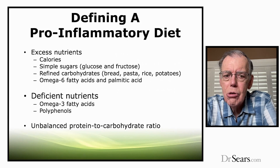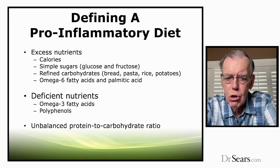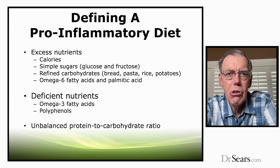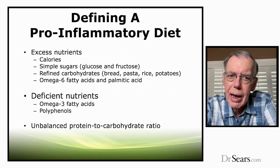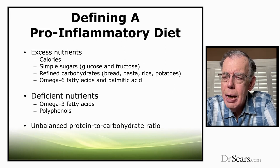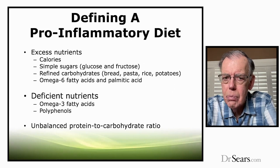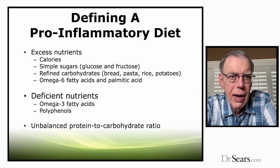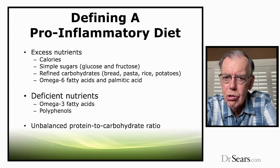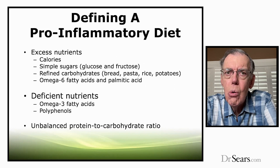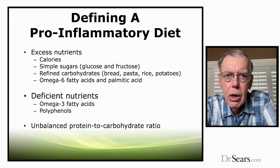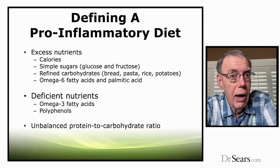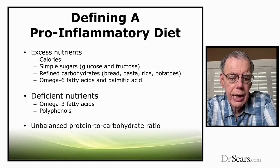Another category is being deficient in certain nutrients — these would include omega-3 fatty acids and polyphenols. And finally, you can have an unbalanced ratio of protein to carbohydrate in your diet. Any one of these three factors can give rise to insulin resistance, and the more of the three factors you have, the greater the levels of insulin resistance you carry in your body.